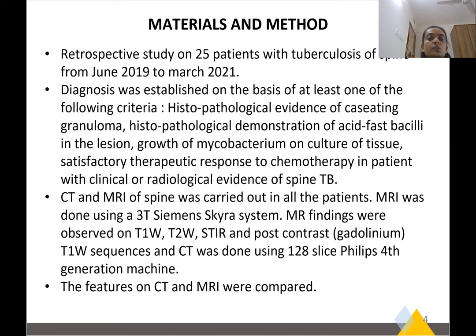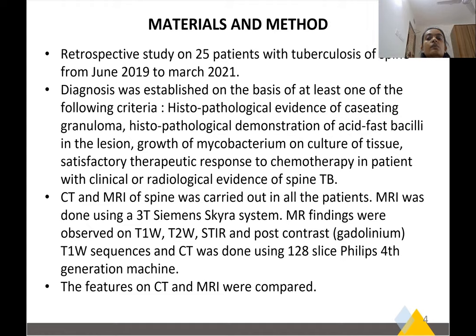Materials and method: retrospective study on 25 patients with tuberculosis of the spine from June 2019 to March 2021. Diagnosis was established on the basis of at least one of the following criteria: histopathologic evidence of caseating granuloma, histopathologic demonstration of acid-fast bacilli within the lesion, growth of Mycobacterium on culture of tissues, or satisfactory therapeutic response to chemotherapy in patients with clinical or radiological evidence of spine TB.